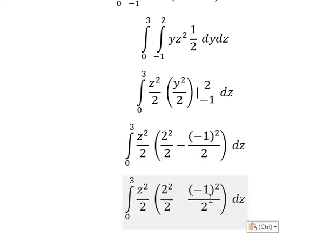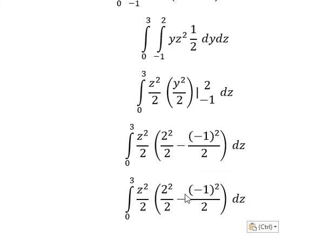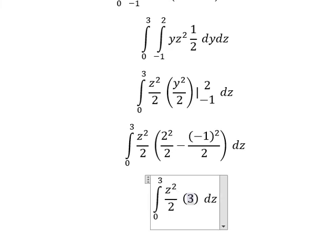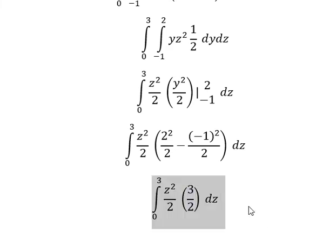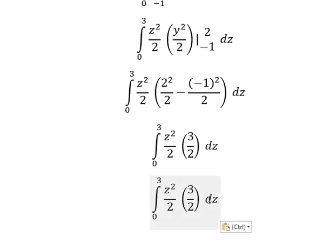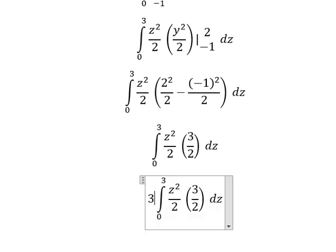This gives us 3 over 2. So 3 over 2, and combined with the previous result we get 3 over 4.